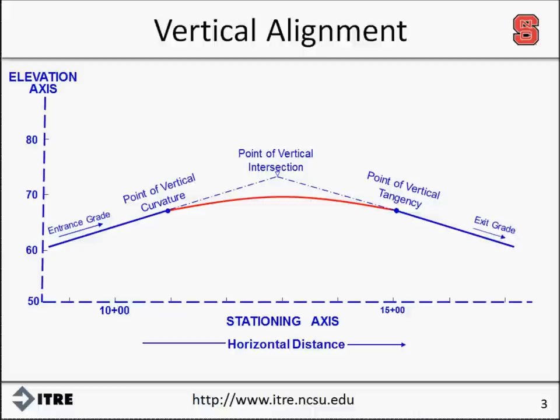Several points of interest along the curve include the location where the tangents intersect, which is known as the point of vertical intersection; the location where the vehicle leaves the tangent grade and begins to drive along the curve, which is known as the point of vertical curvature; and the point where the curve ends and the vehicle returns back to the tangent grade, which is known as the point of vertical tangency.